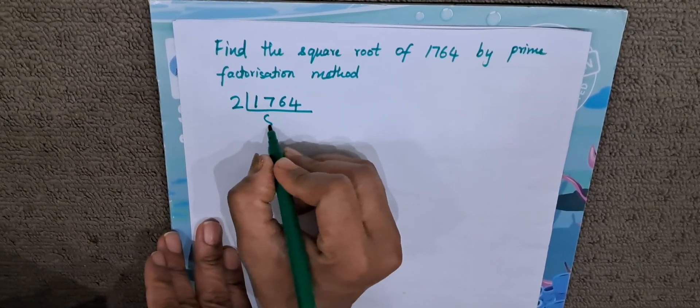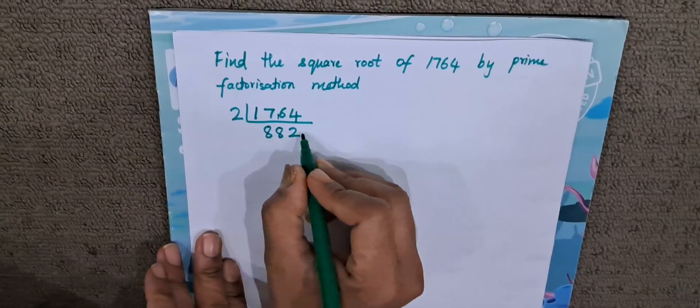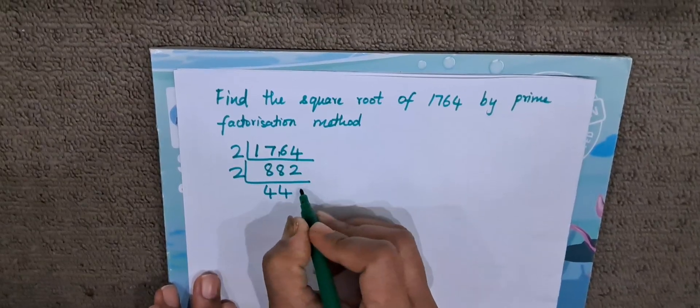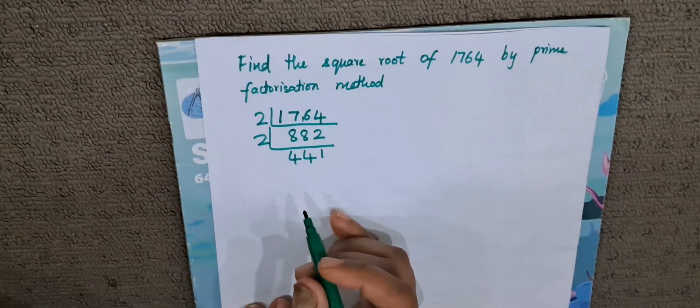2 8s are 16, so 1 is the remainder. 2 8s are 16, 2 2s are 4. Again, this number is divisible by 2. 2 4s are 8, 2 4s are 8, 2 1s are 2. Sorry for the interruption.